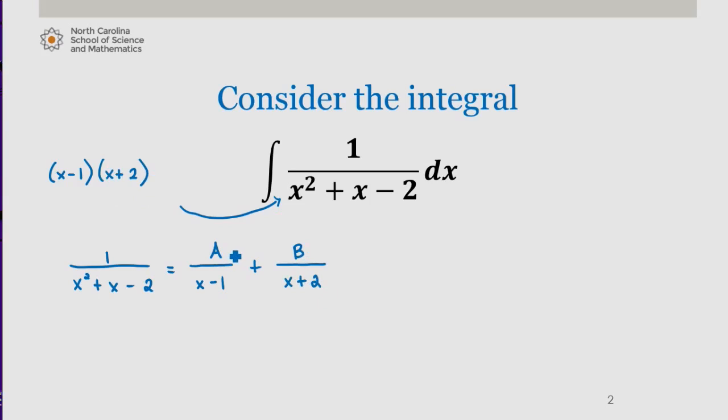Our goal is to solve for the constants a and b. So let's do this by multiplying both sides of the equation by the original denominator, x squared plus x minus 2, since it's the common denominator among all rational expressions.